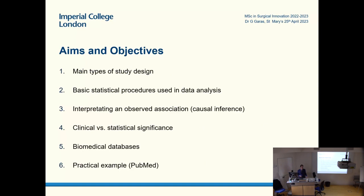Let's start with the aims and objectives of this lecture. First, we're going to look at the different study designs and discuss basic statistical procedures commonly used to write papers. I also want to show you how to interpret an association and how to make causal inferences. We're going to look at the concept of significance — not just statistical significance, but also clinical significance, because that's not necessarily the same thing. And then the last part, which is probably the most relevant to you, is the biomedical databases, and I'll illustrate with a practical example how to be very efficient with your literature searches.